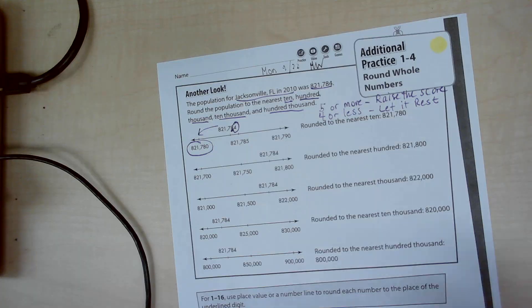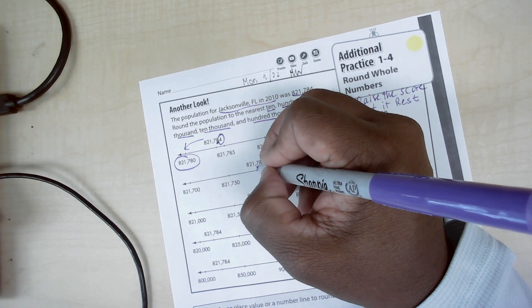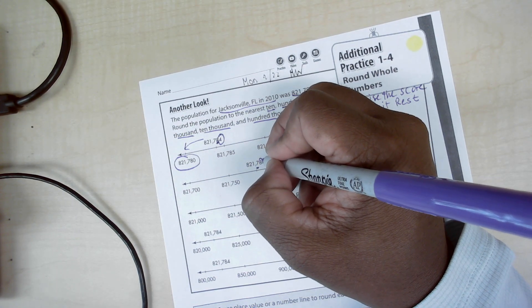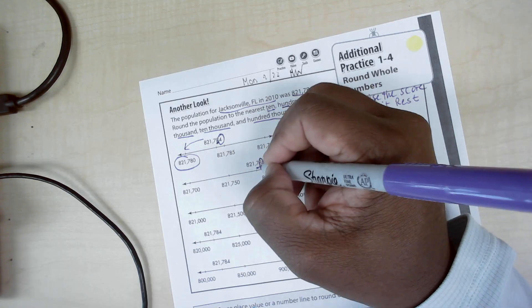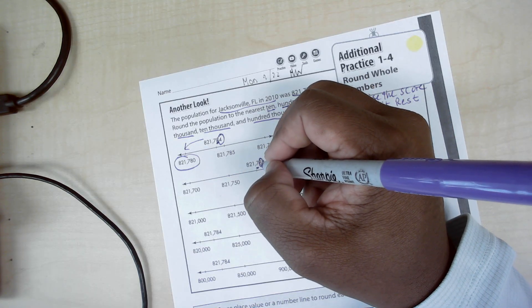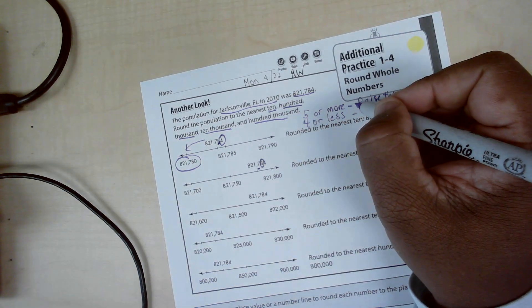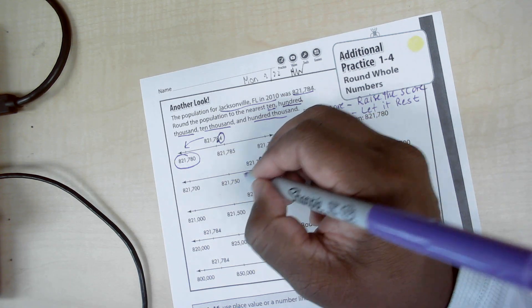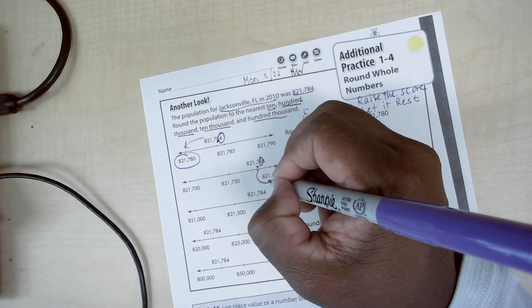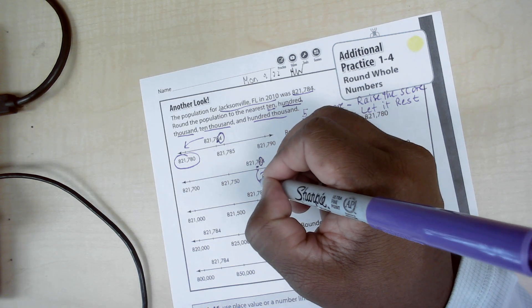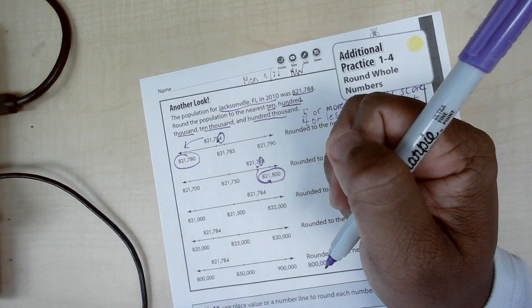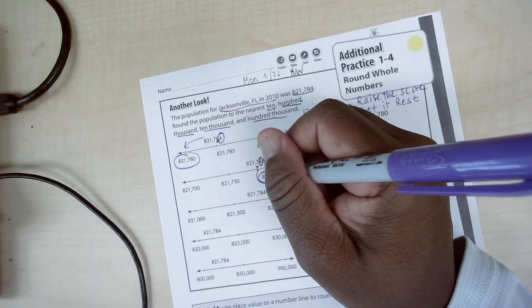Same thing. Now if I went about to nearest hundred, I look at the hundreds place and I underline it, and that's a seven, and I circle the digit to its immediate right, and that's an eight. So the circle digit is five or more, so we raise the score. So this rounds up to eight hundred twenty one thousand eight hundred. So seven hundred rounds up to eight hundred.